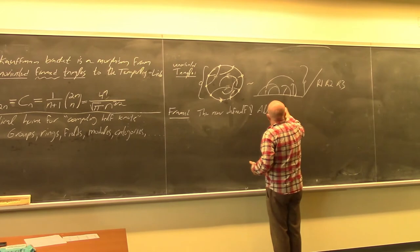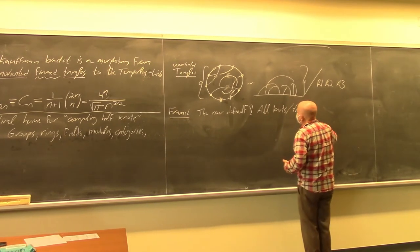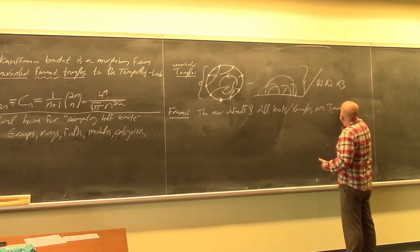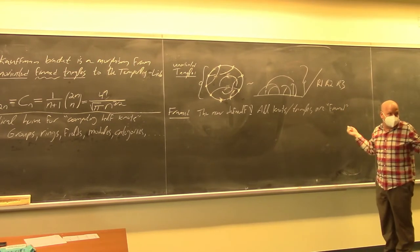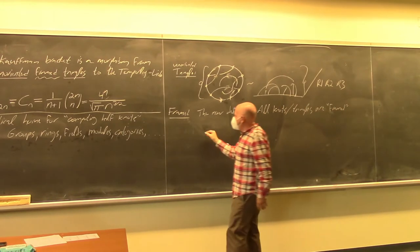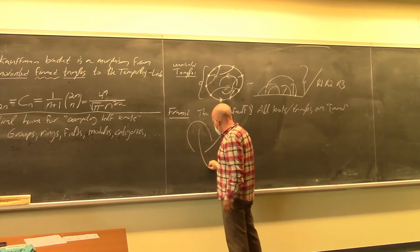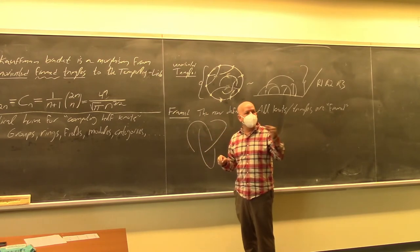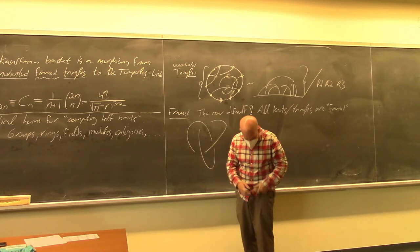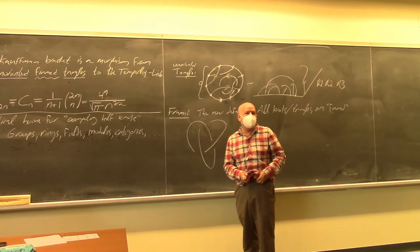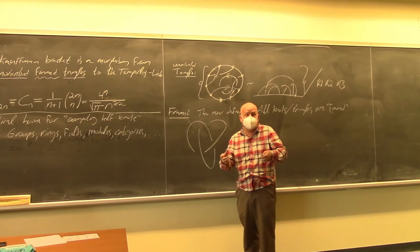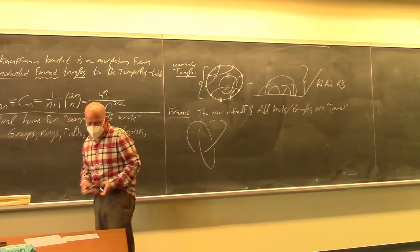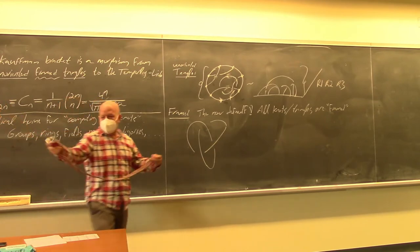All knots, tangles, and all knotted objects we will talk about from this point on are framed. What does framed mean? Instead of knotting a one-dimensional line, you knot a thin ribbon. For example — I've done it already once but I'll do it again — if you take a belt and knot it, that will be a framed knot. Here is a framed knot.